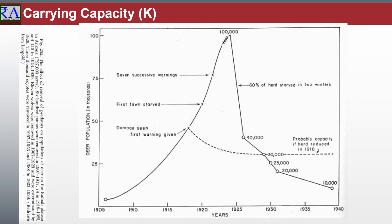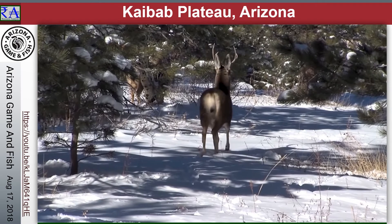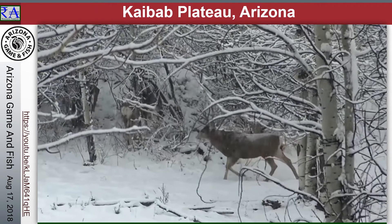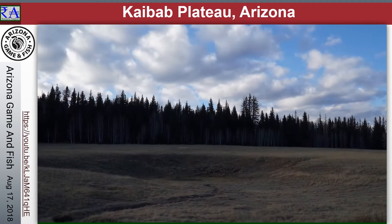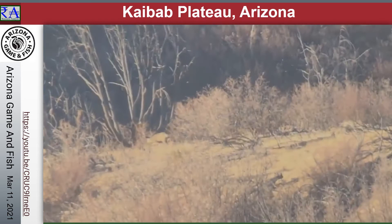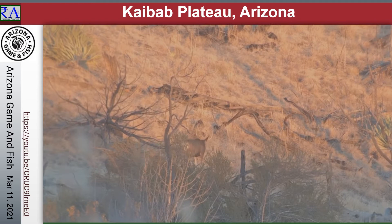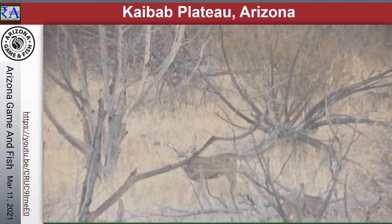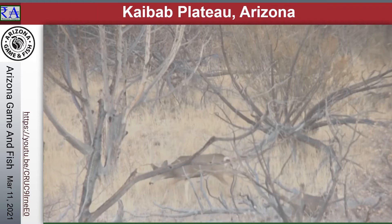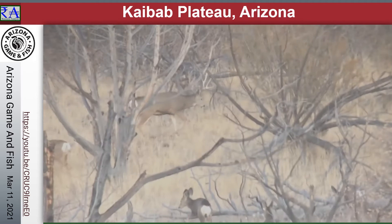Before 1905, the deer on the Kaibab Plateau were estimated to number about 4,000. The average carrying capacity of the range was then estimated to be about 30,000 deer. On November 28th, 1906, President Theodore Roosevelt created the Grand Canyon National Game Preserve to protect the finest deer herd in America. Unfortunately, by this time the Kaibab Forest area had already been overgrazed by sheep, cattle, and horses, and most of the tall grasses had been eliminated. The first step to protect the deer was to ban all hunting. In addition, in 1907, the Forest Service tried to exterminate the predators of the deer. Between 1907 and 1939, 816 mountain lions, 20 wolves, 7,388 coyotes, and more than 500 bobcats were killed.